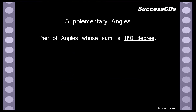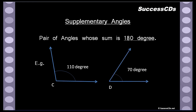Second: supplementary angles. A pair of angles whose sum is 180 degrees. When I say pair, please remember that means only two angles — don't take five, three, or seven. Only two angles are allowed, whose sum is 180 degrees. Here angle C is 110 degrees and angle D is 70 degrees. Adding C and D: 110 plus 70 is 180 degrees. Therefore, angle C and angle D form a pair of supplementary angles.